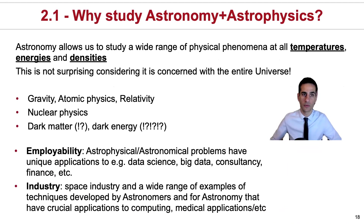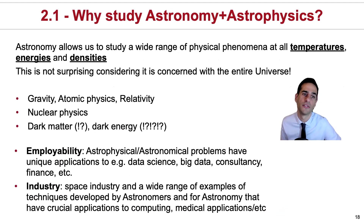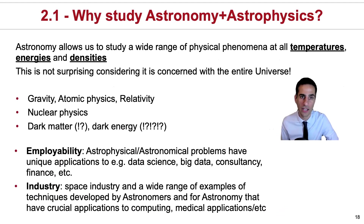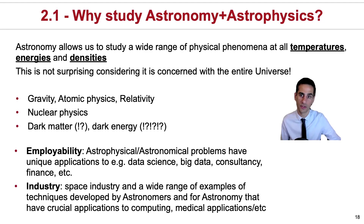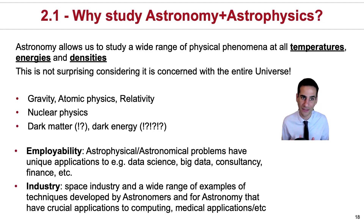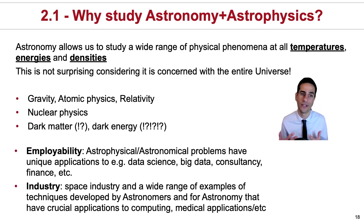Astronomy really allows us to study a wide range of physical phenomena. This covers a wide range of temperatures — from the coldest, not quite as cold as our record in Lancaster, but pretty cold — to some of the highest temperatures, especially around supermassive black holes or some stars. It's not surprising that we use all kinds of physics, from gravity to atomic physics, relativity, and nuclear physics. And when you take other astrophysics modules, this will be even more the case.